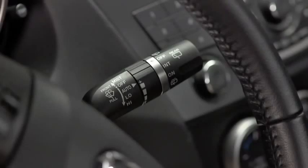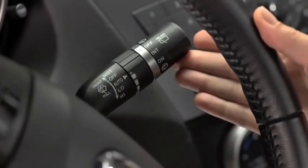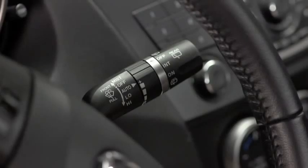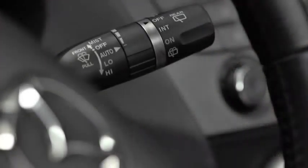For a single wipe, push the lever up to mist. For full-time low or high-speed wiping, pull the lever down to the low or high position. To spray washer fluid, pull the lever toward you.